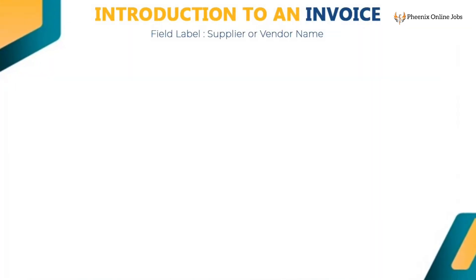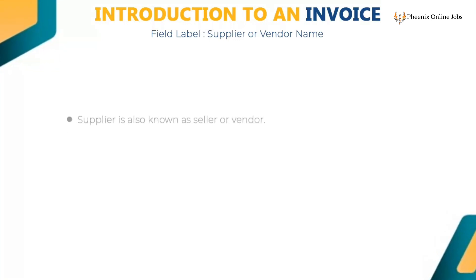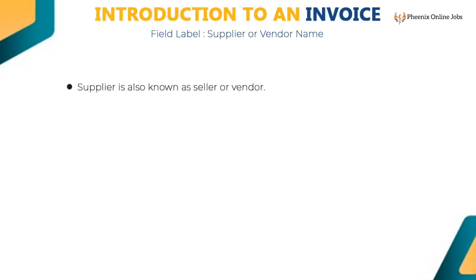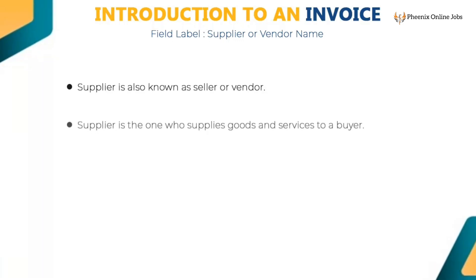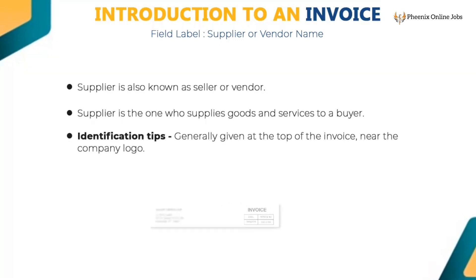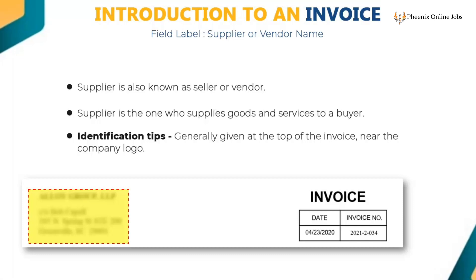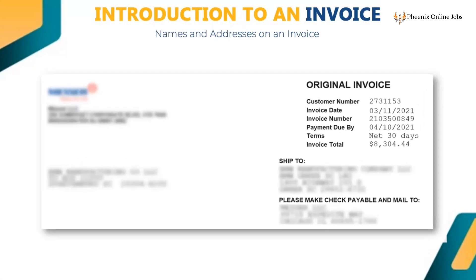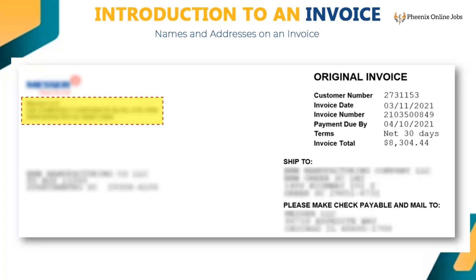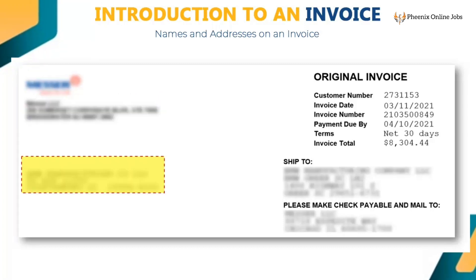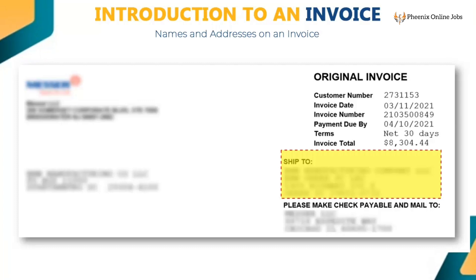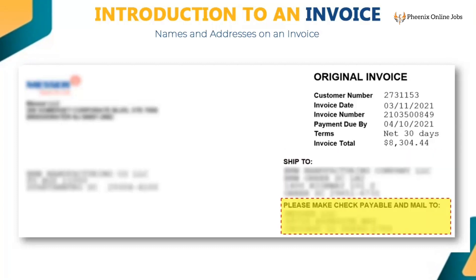Let us now see the different field labels, where to find them on the invoice, and what to capture. Supplier is also known as seller or vendor — the one who supplies goods and services to a buyer. Generally, the supplier name appears at the top of the invoice near the company logo. In this image we see four sets of names and addresses: supplier name and address, buyer or bill to name and address, delivery or ship to name and address, and remit to or check payable to name and address.